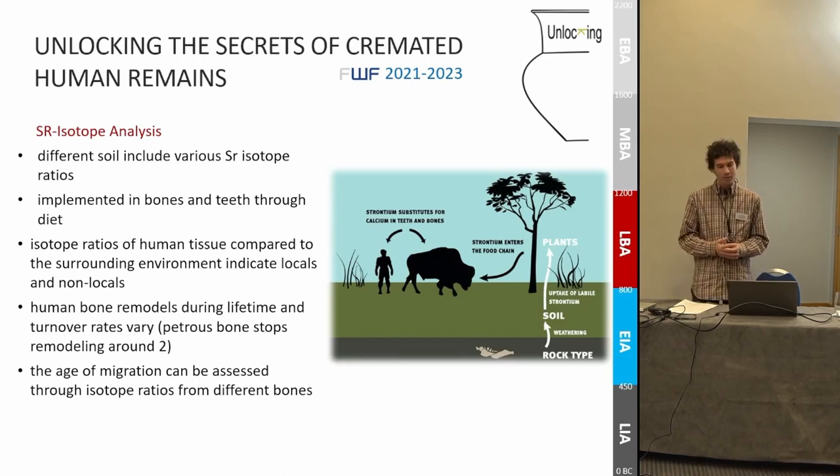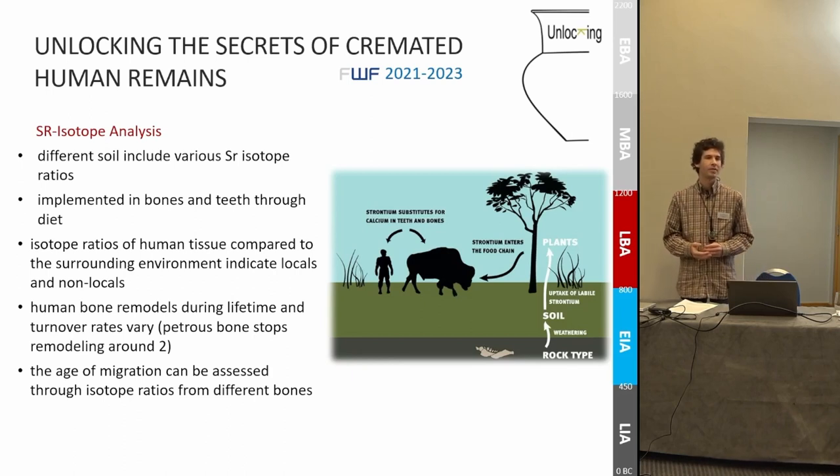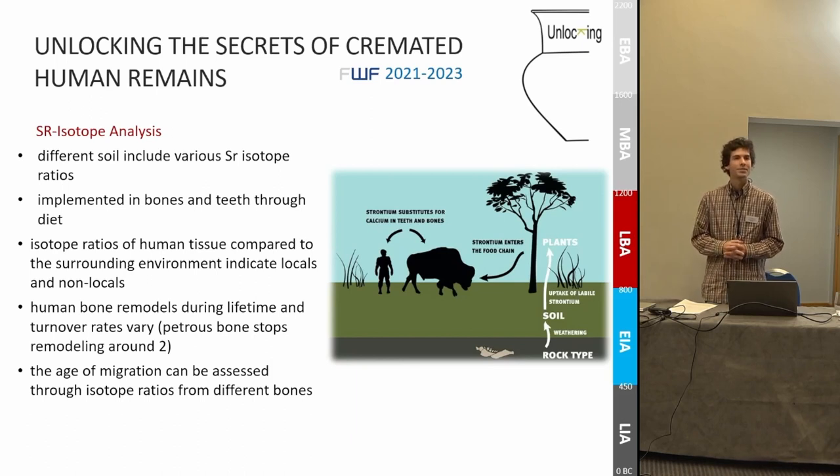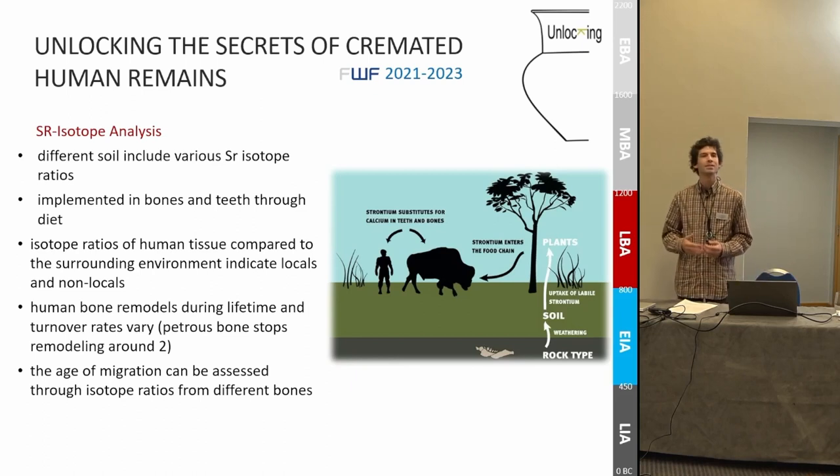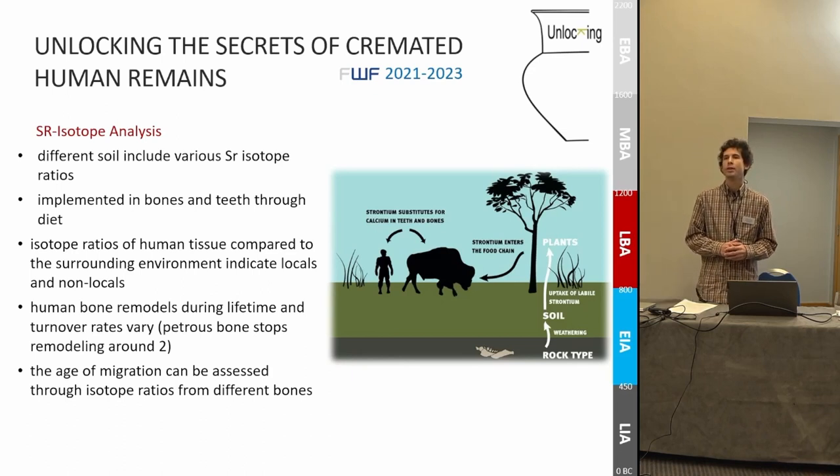A few years ago, it has been demonstrated that cremated remains preserve strontium isotope ratios just as well as dental enamel. In addition, human bone remodels during lifetime, and turnover rates vary within the body. So we can take different samples of the human skeletons to check whether one individual have changed its residence during lifetime. For example, if we sample the Petrus bone, the bone around our inner ear, this provides us a signal from around birth. The femur will give us a signal from the last 20 years in the life of a person. And if we want to receive a short-term signal, the ribs are remodeling each two to three years.